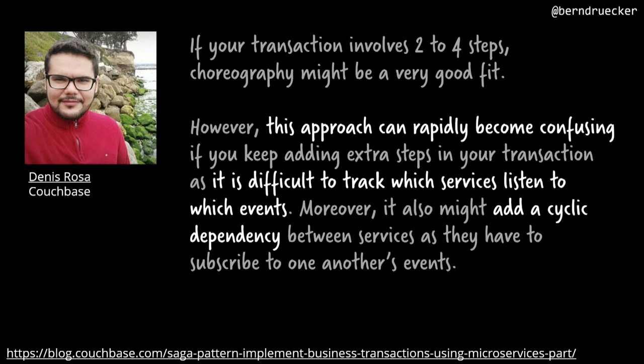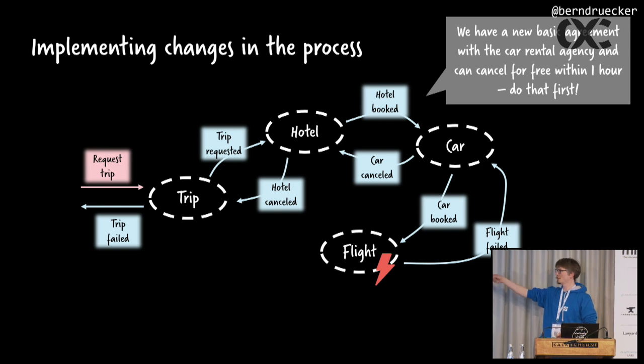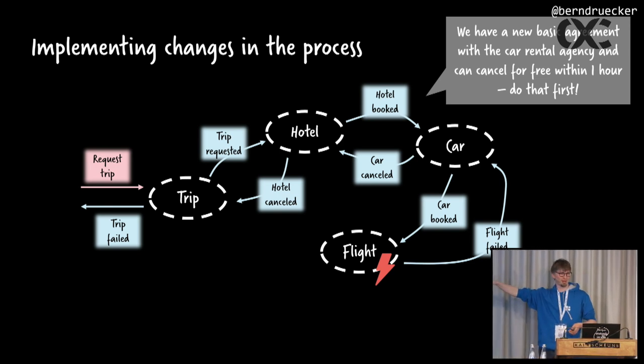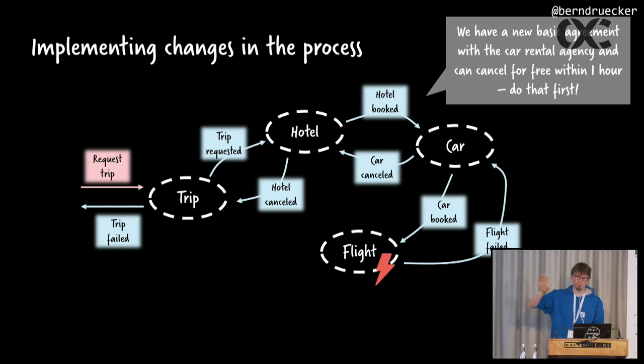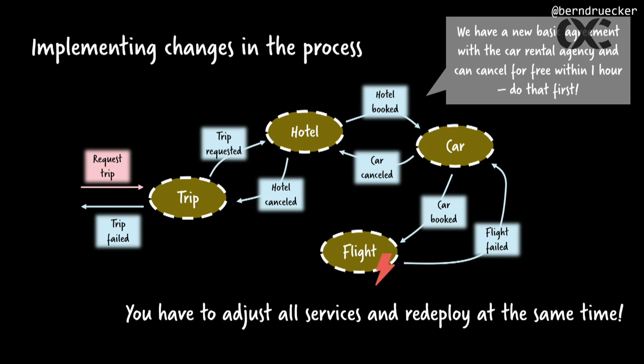You should make a conscious decision to take these risks if you go the choreography route. A simple example: these sagas are often ordered by risk — cancelling the hotel is least expensive, cancelling the flight most expensive. If we get a good deal with a car rental agency and can cancel for free, we want to do the car before the hotel. If you want to change that sequence in a choreographed system, you have to change each and every service, redeploy them, and also think about ongoing trip bookings currently circulating through the system.